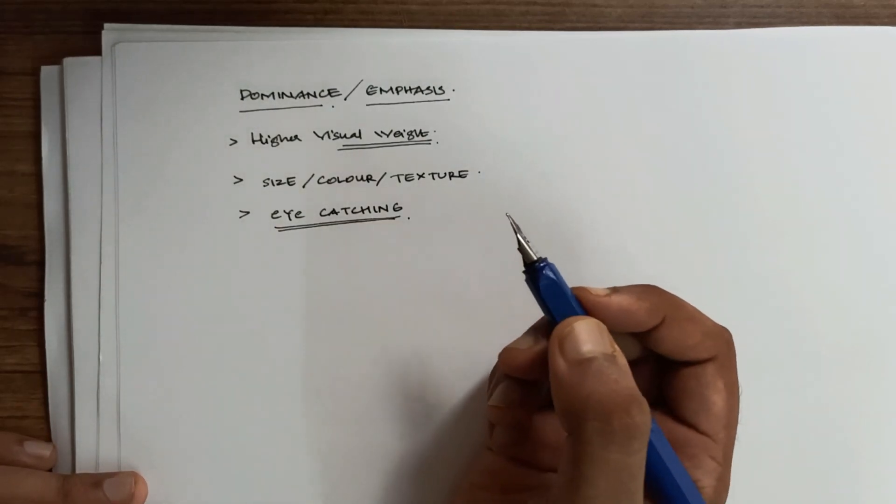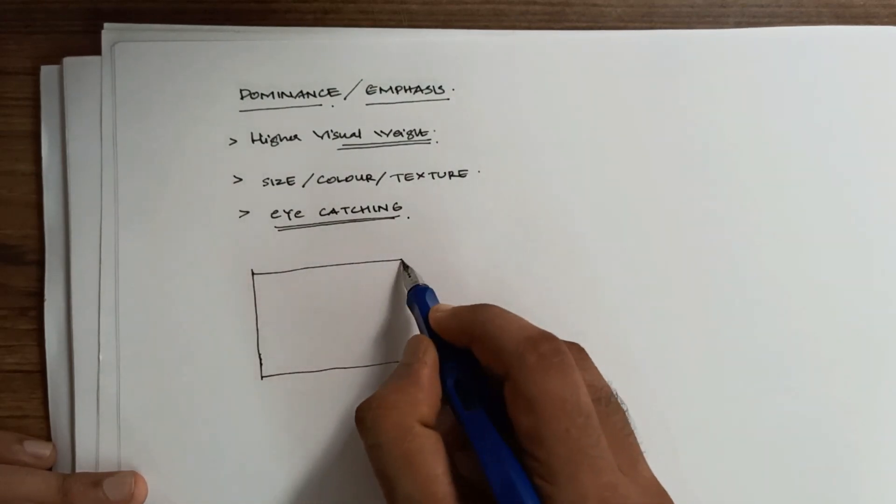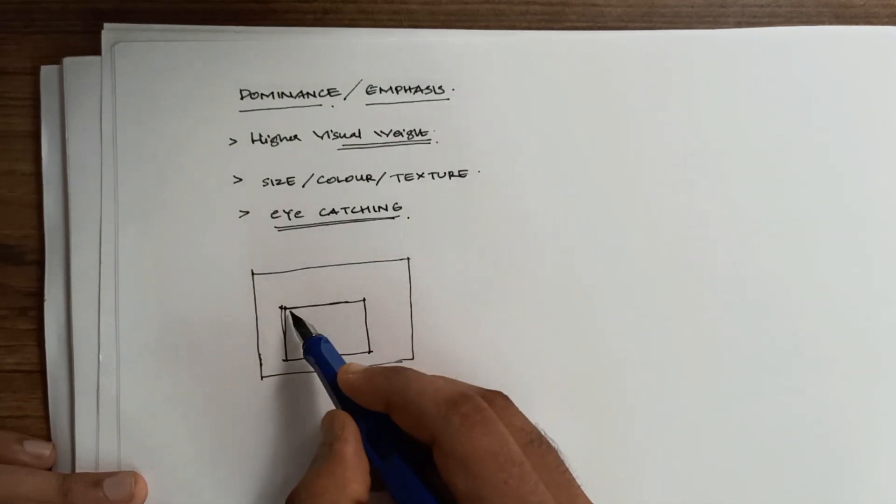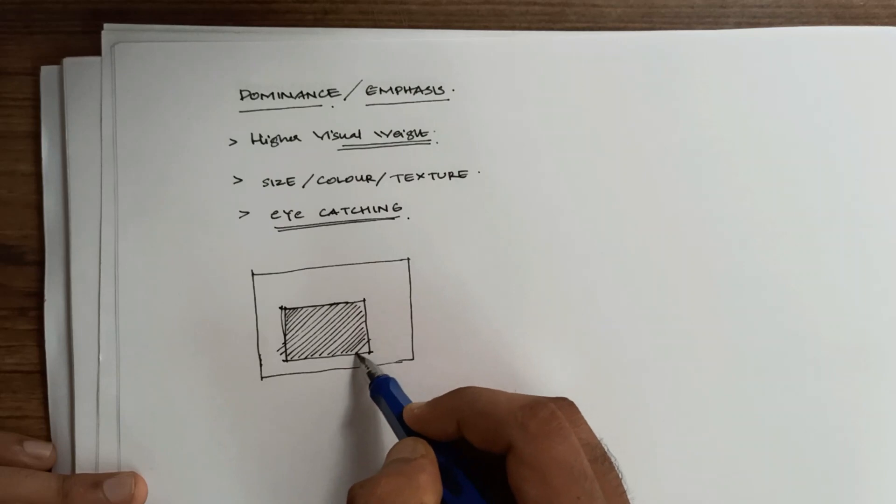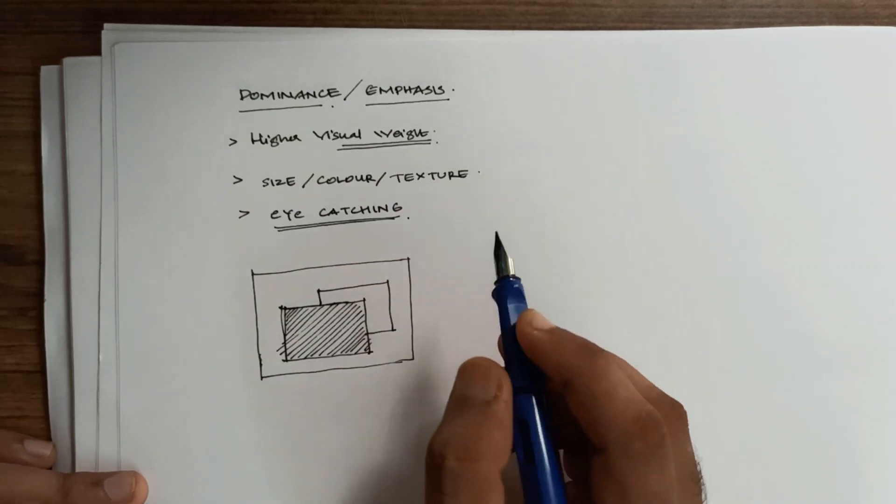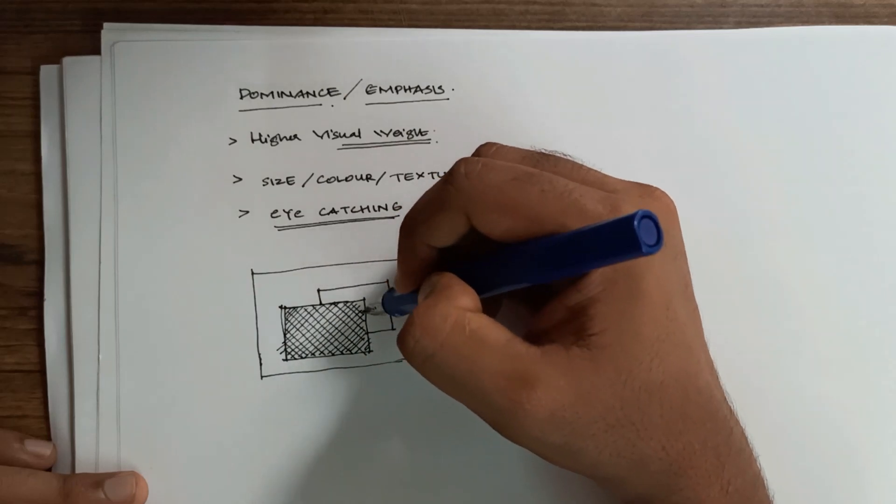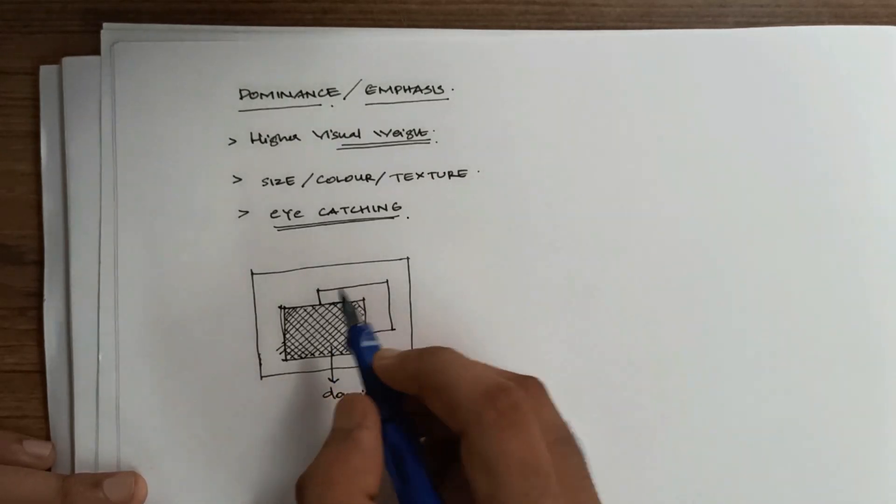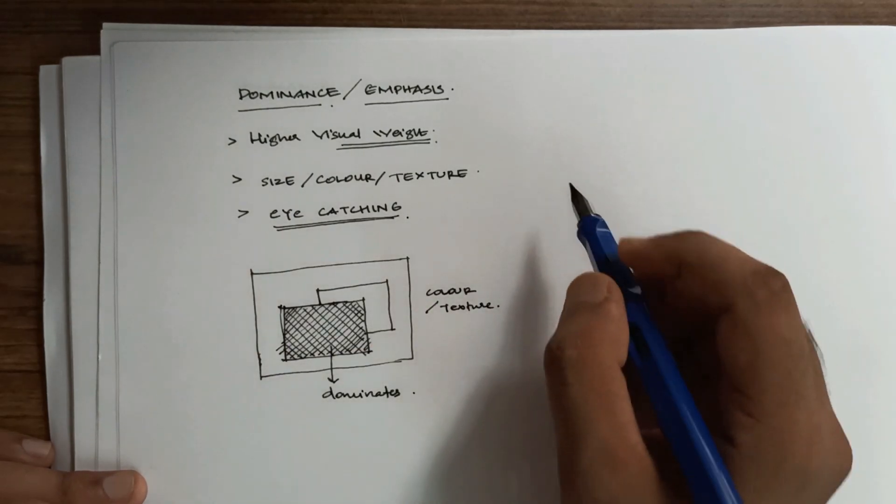Consider a field of view like this. If I am having a rectangle that is brightly colored and there is another rectangle in the background which is lighter, automatically this particular rectangle dominates. This is in terms of their color or texture.